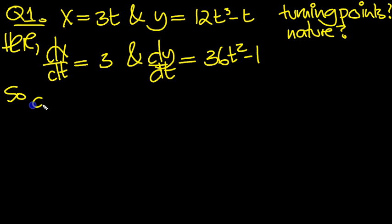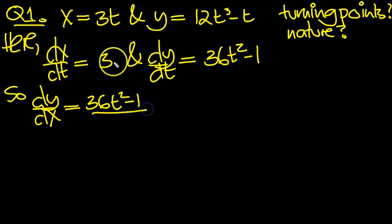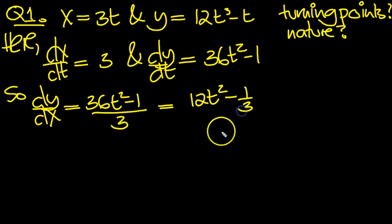So dy dx then will equal dy dt divided by dx dt, 36t squared minus 1, that's dy dt, divided by dx dt which is 3. Run the 3 through, split up the fraction, so 36 over 3 is 12, and then the 1 over 3 with the minus, minus a third. So that equals 0.